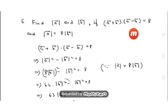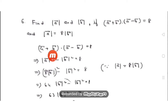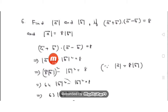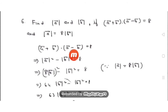First we consider the expression (a + b)·(a - b) and simplify it. We can use the formula (a + b)·(a - b) = |a|² - |b|², which we have discussed when we covered the properties of dot product. This equals 8.